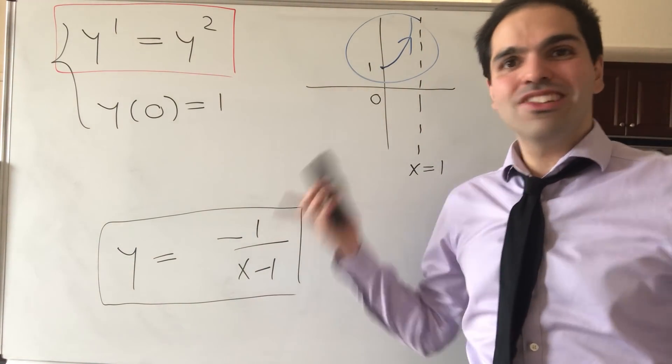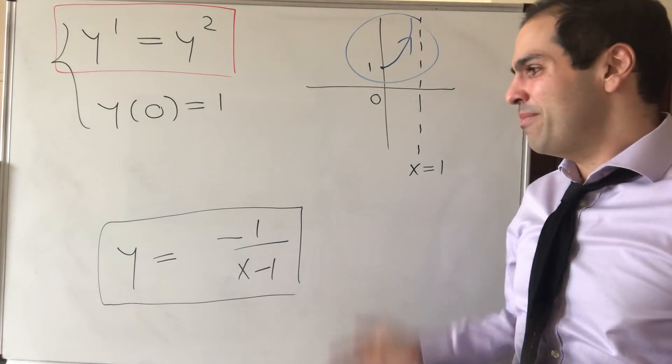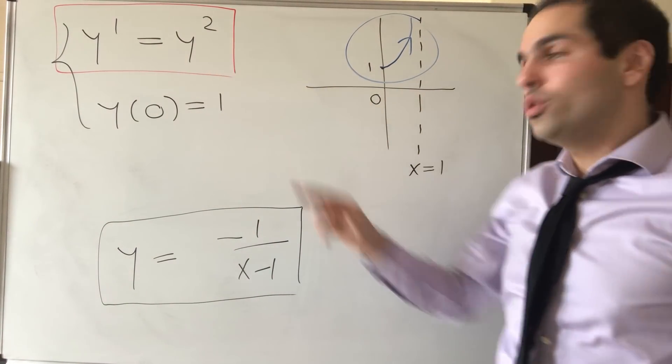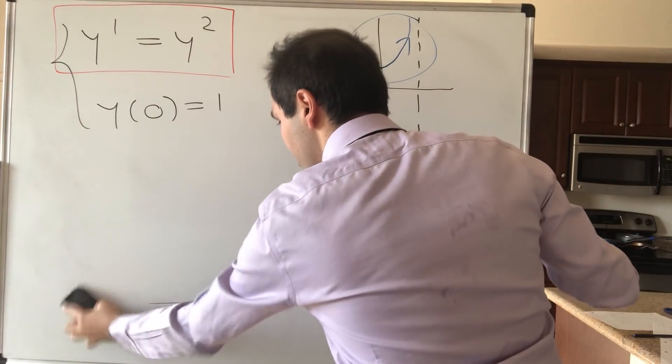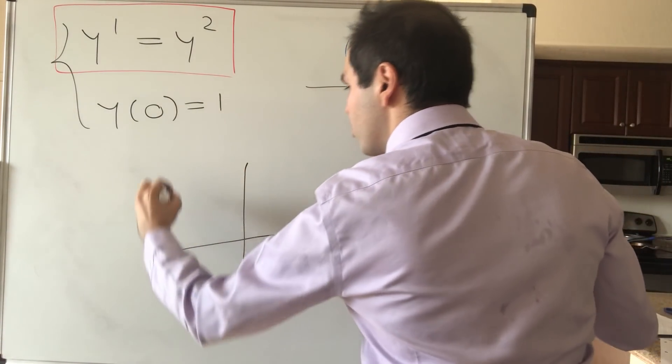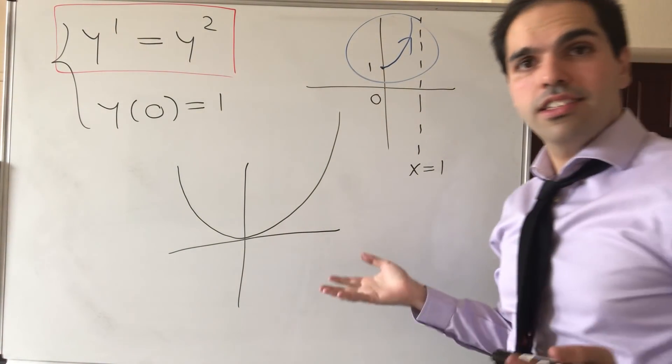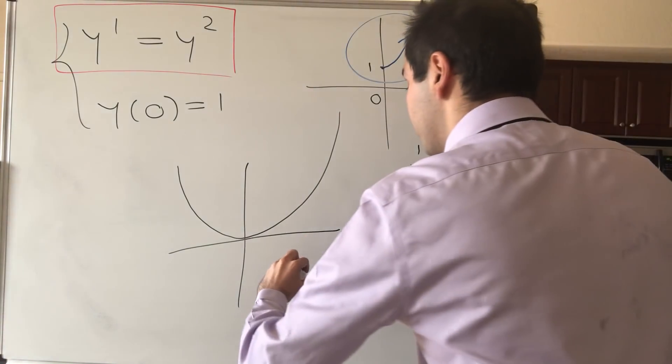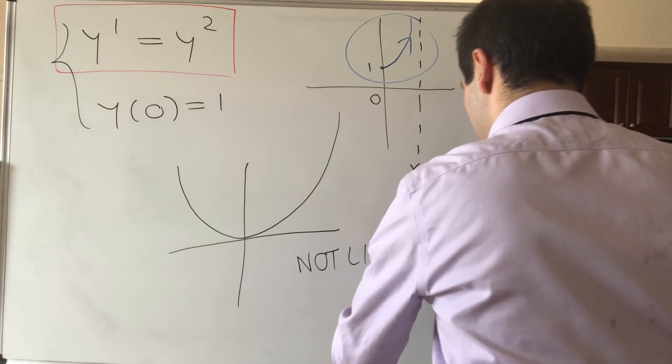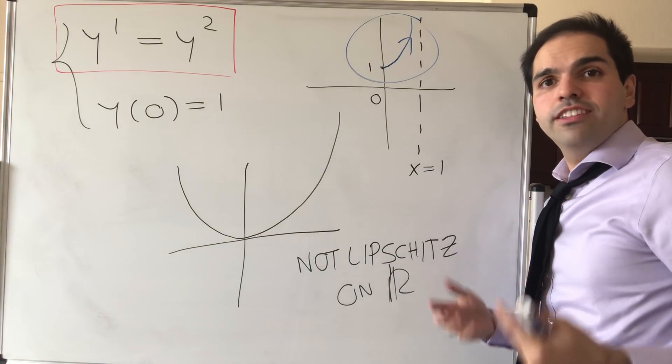And you're like, isn't there a theorem that says that differential equations don't blow up in finite time? Well, yes and no, because it turns out here we do have an issue. Because if you consider the function y squared over the whole line, even though this is continuous, it's not what's called Lipschitz continuous. So not Lipschitz on the whole domain, on R. And what does Lipschitz mean?